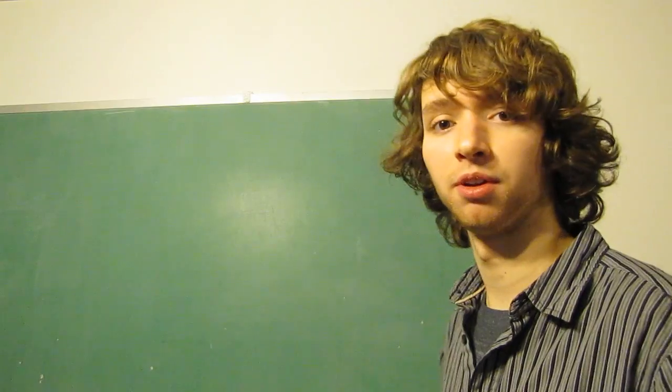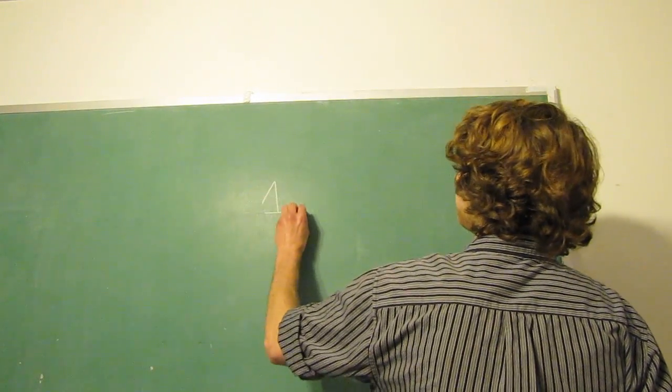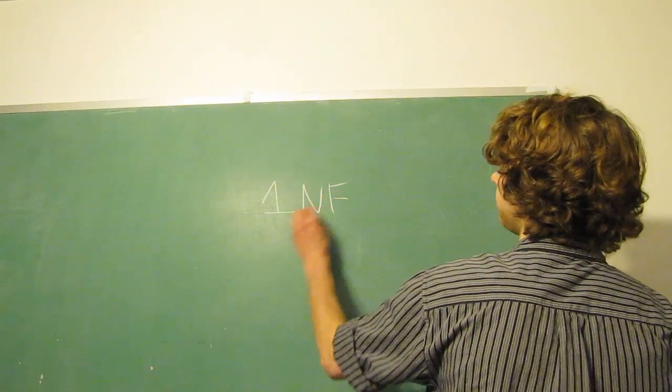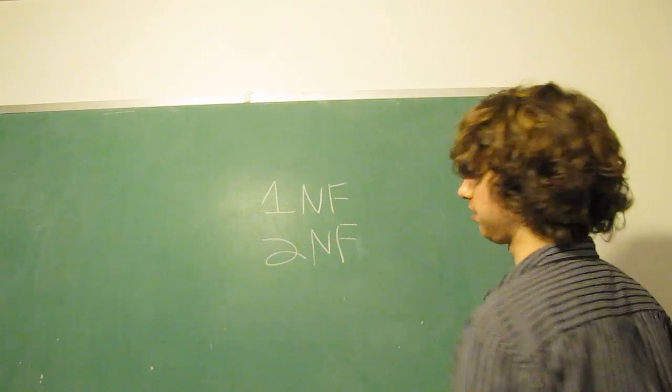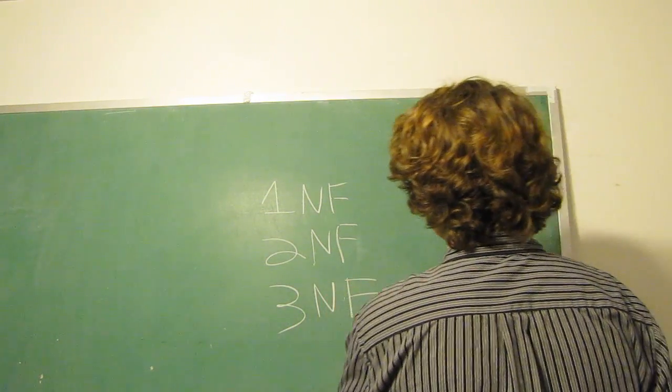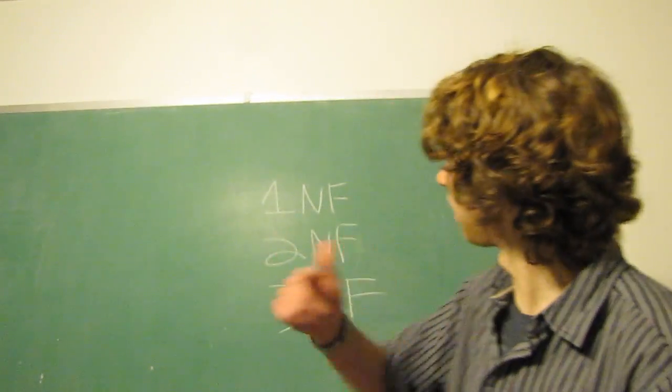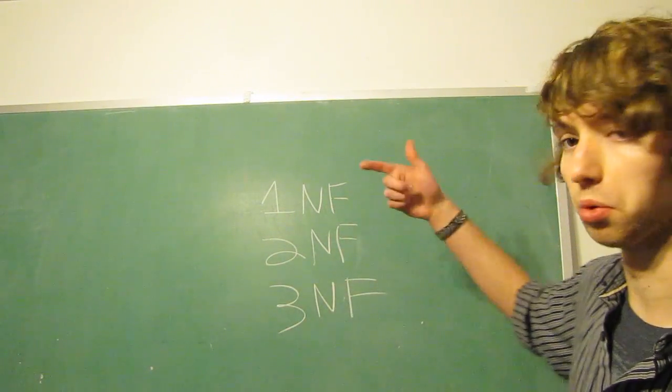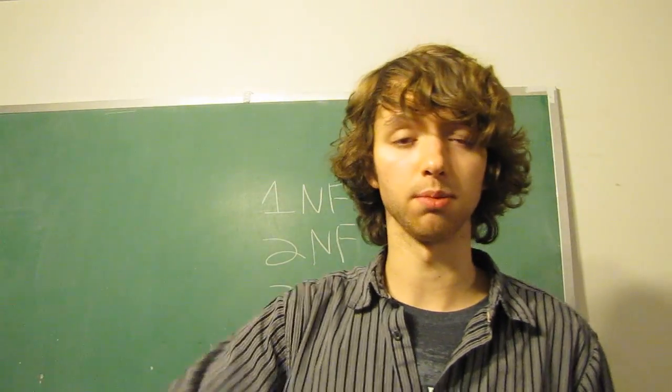So yeah, there's three main forms, and these are named very conveniently, I have to admit. First normal form. Second normal form. And guess what the third one is? Yeah, you guessed it. Third normal frame. I'm kidding, it's form. That'd be weird though. All right, so we've got first normal form, second normal form, and third normal form. These are the three steps of normalization for databases.